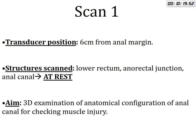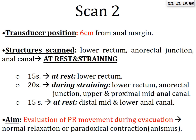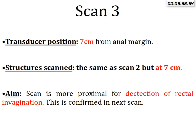The aim of scan one is to detect any anatomical abnormality in the anal sphincter or muscle injury. Scan two is also at six centimeters from the anal verge, performed at rest and at straining. The first 15 seconds the patient relaxes, the next 20 seconds the patient strains, and the last 15 seconds is done at rest. The aim of this scan is to evaluate movement of the puborectalis during evacuation, to detect any paradoxical contraction of the puborectalis or anal sphincter.